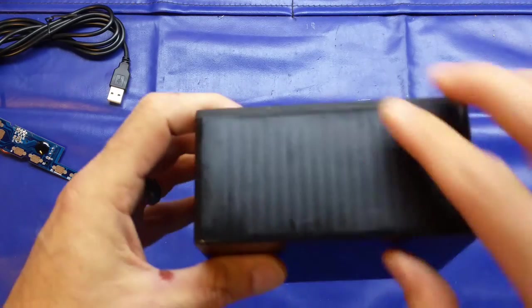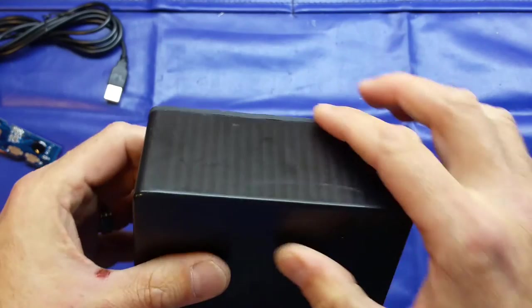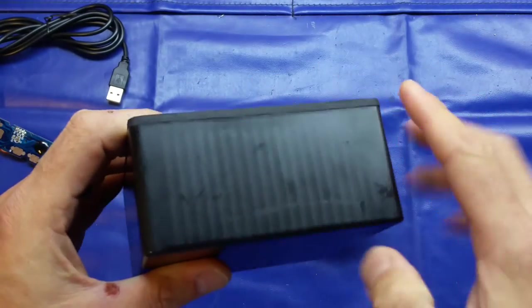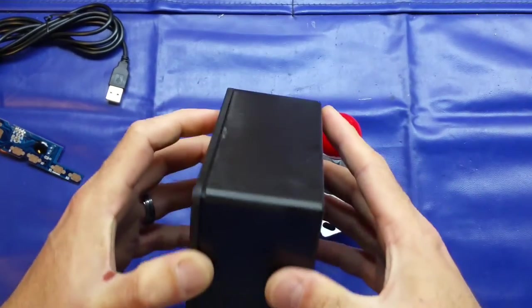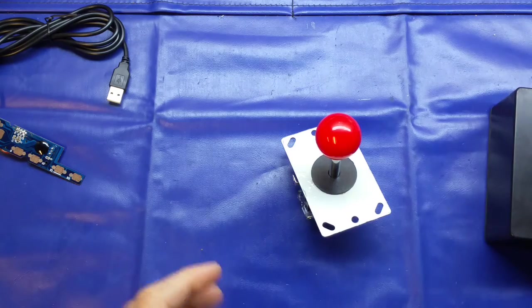So what I've done is I've actually cut these off, cut the flanges off the side using my Dremel and cut-off disc, and that's left us with a nice square enclosure for mounting our parts.